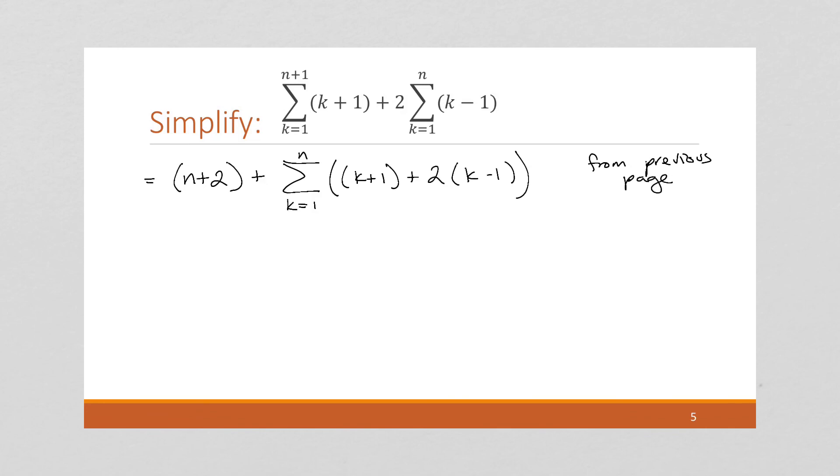And simplify. This is k plus 1 plus 2k minus 2. So, we can finally write this as 3k minus 1.